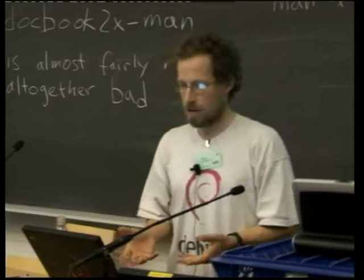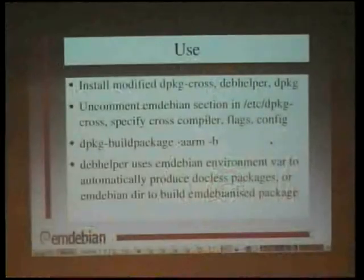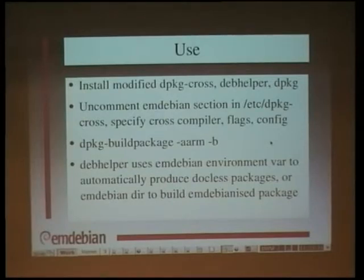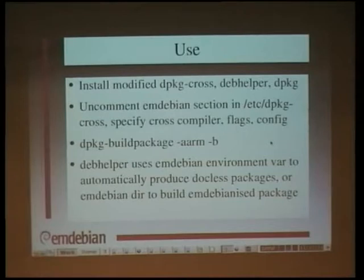So the way you actually use this: you install our modified tools — modified debhelper, dpkg, and dpkg-cross — set that MDebian flag, and then just build things with -a arm instead of what you normally did. In principle it spits out all the Debian packages for another architecture. As I observed earlier, that generally doesn't work except for extremely simple packages. And that's where we're going to have a session afterwards, sit around and hack some things and discuss about stealing a number of good bits out of Scratchbox — especially the ability to run non-native binaries in order to do compile-time tests.